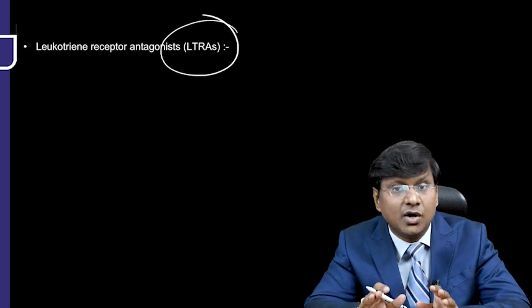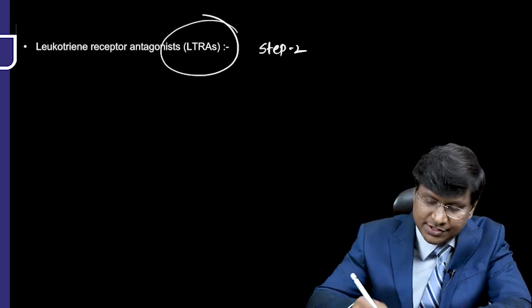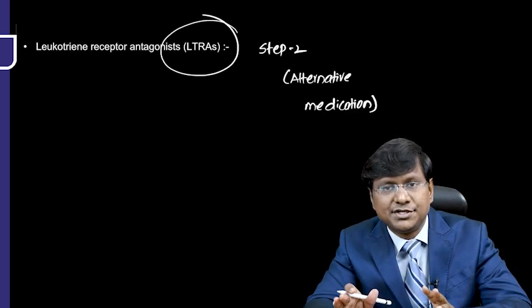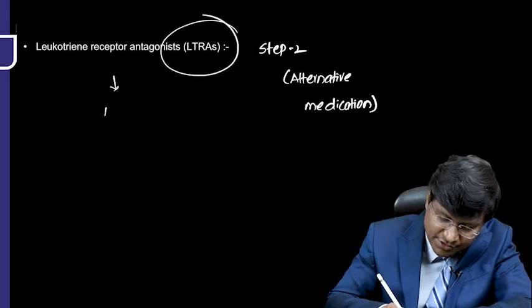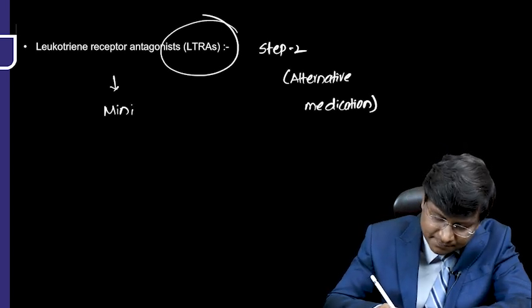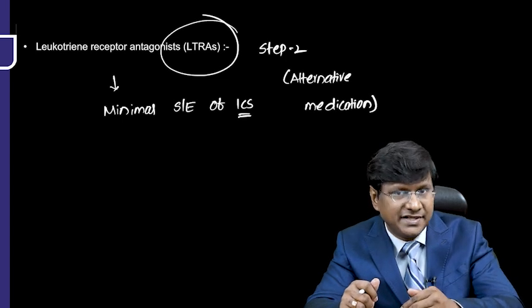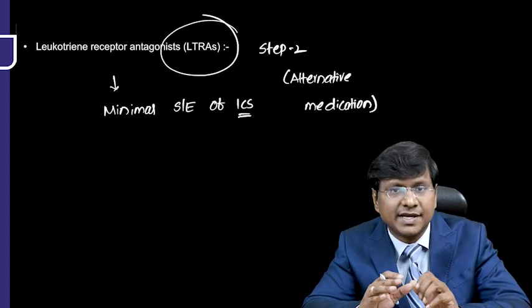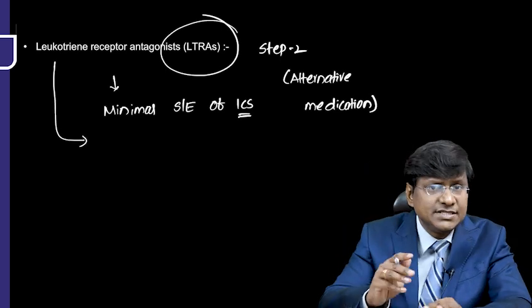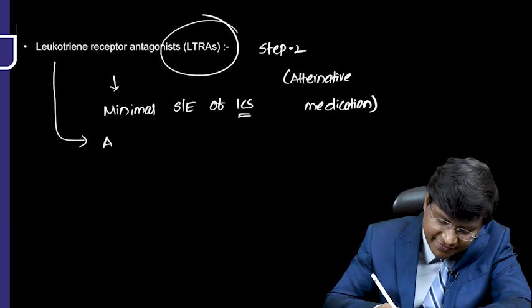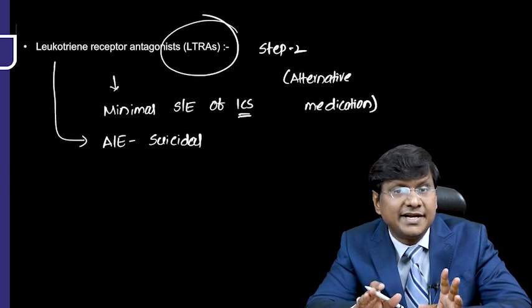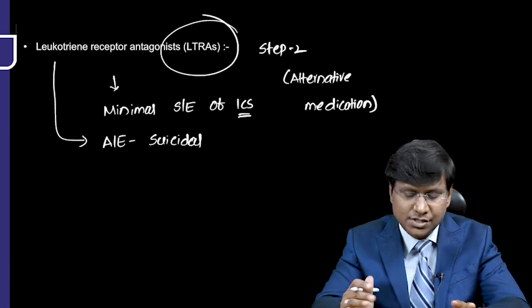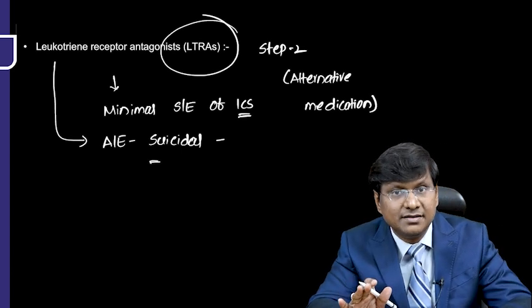Leukotriene receptor antagonists can be considered as the alternative medication in Step 2, specifically for those concerned about the side effects of inhaled corticosteroids. However, recent warnings highlight the adverse effect of suicidal ideation associated with montelukast, which must be taken into account.